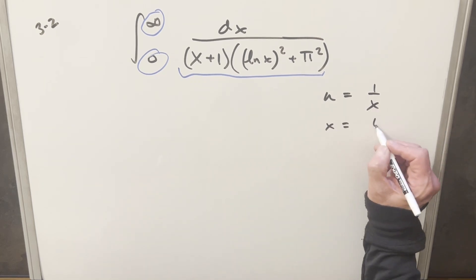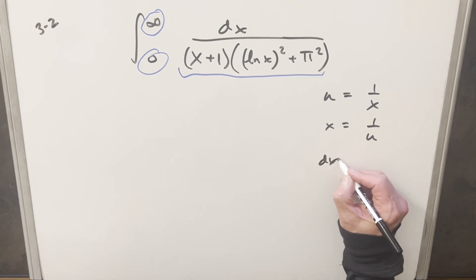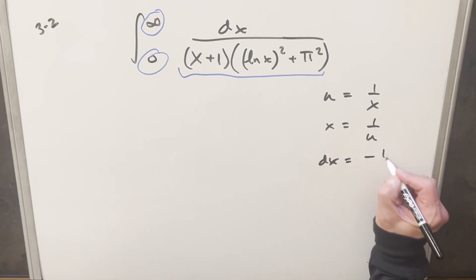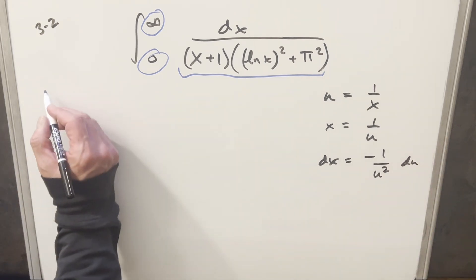Solving for x, we have x equal 1 over u. I'll take a derivative in order to get the dx value, so dx is going to just become minus 1 over u squared du. So then let's go ahead with this substitution.